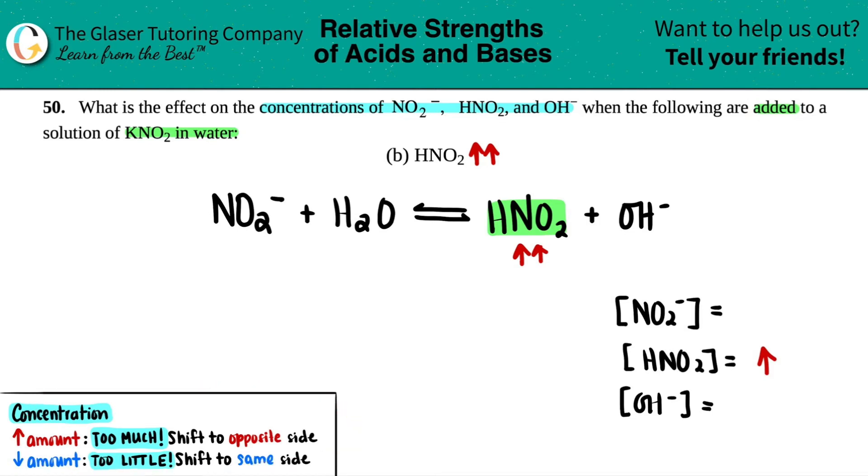But now we use Le Chatelier's principle to figure out what's going on with the other ones. If you increase in amount, you have way too much. Your shift is always going to be on the opposite side. Since you're increasing this way, you're going to shift to the other side. Meaning since the increase is on the products, you shift towards the reactants. And whichever way you shift, that's going to be an increase. So in this case, since the overpowering reaction is going from right to left, you're going to be increasing NO2. So that takes care of that one. That's going to increase.